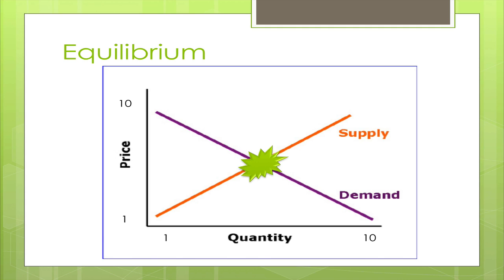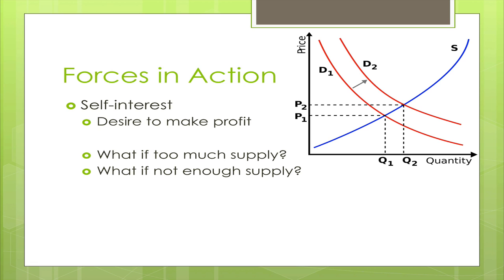Both sides of the supply and demand curve are dominated by self-interest — both sides want the best deal and want to make maximum profit. Both sides want to find what's best for them, but still have to work with the forces on the other side. Suppliers need to work with consumers, and consumers need to go with what suppliers have, in order for each side to be potentially happy. If we have happiness on both sides of the equation, that is equilibrium. Why do we have this delicate balance? Because self-interest comes in the form of a desire to make profit, both sides have to kind of work together or the curves become out of whack.